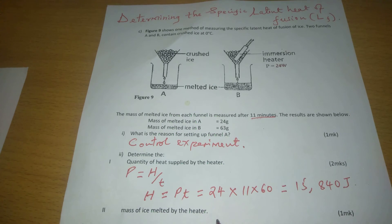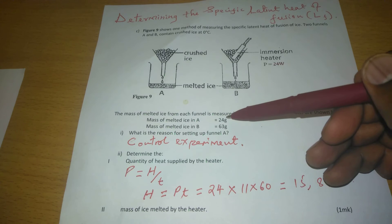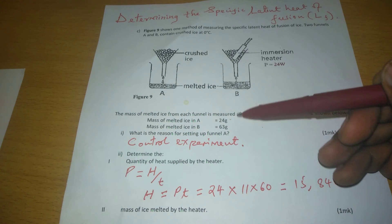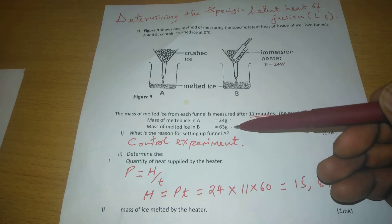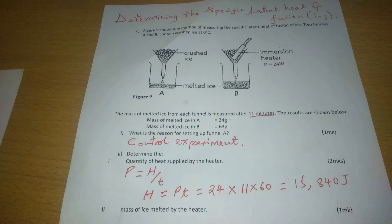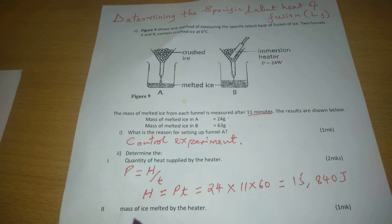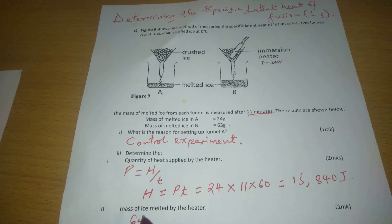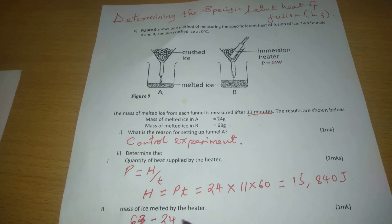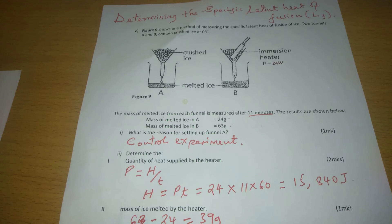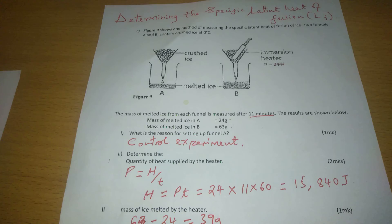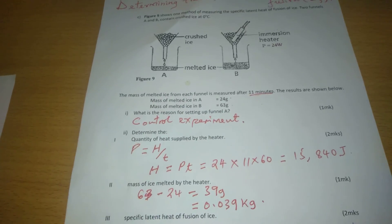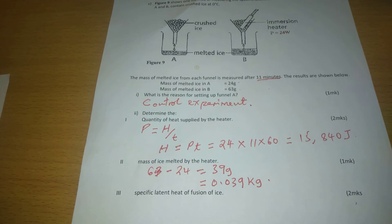Mass of melted ice by the heater. We have mass of melted ice naturally and mass of melted ice together with heater, so we can subtract the two to know purely what the heater is going to melt. This will lead us to subtracting 63 and 24, which gives us 39 grams, and this can still be converted to 0.039 kilograms.